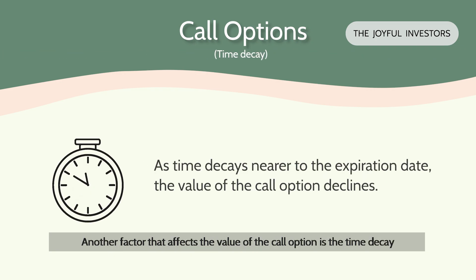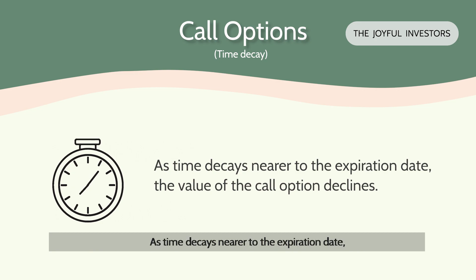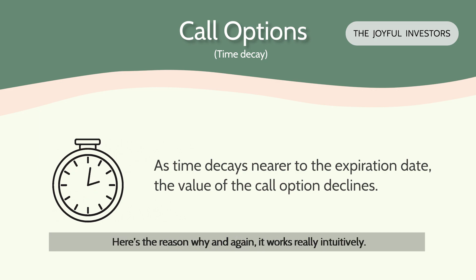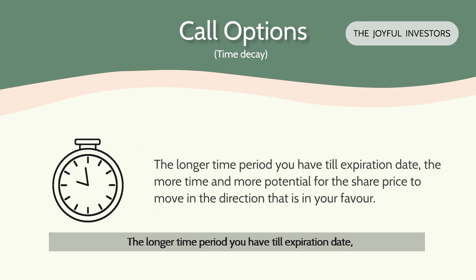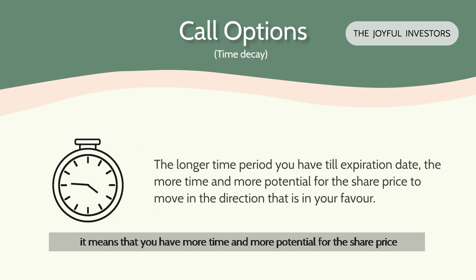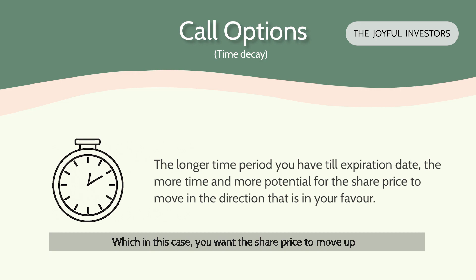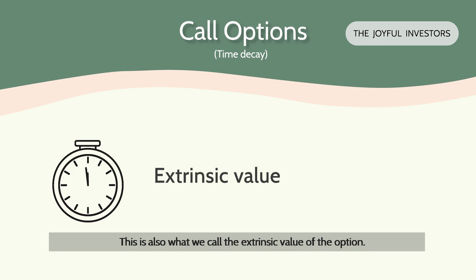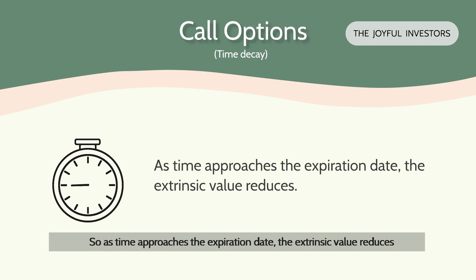Another factor that affects the value of the call option is the time decay, or the time value. As time decays nearer to the expiration date, the value of the call option declines. The longer time period you have to the expiration date, the more time and potential there is for the share price to move in the direction that is in your favour — in this case, you want the share price to move up since you are a buyer of the call option on Apple. This is also what we call the extrinsic value of the option. As time approaches the expiration date, the extrinsic value reduces and the value of the call option declines.